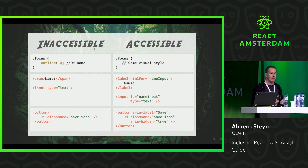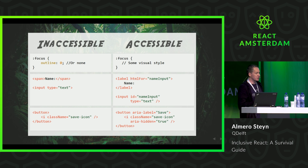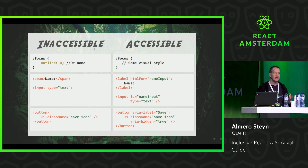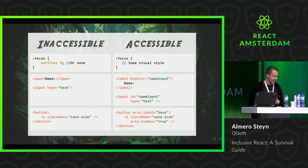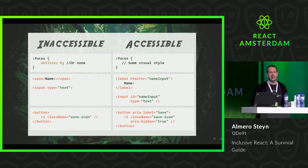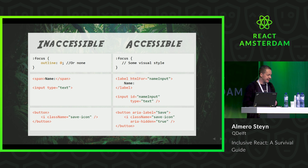Then we've got a span labeling an input. There's no way that this text is programmatically tied to the input, so screen reader users find it hard to know what these inputs are about. Screen reader users rely on software to read the screen back to them because they are unable to see the screen well enough to interact with it. We fix it by using the HTML label element with a for/ID linkage — now it's accessible and the text is available to everyone.